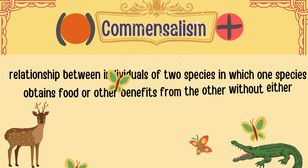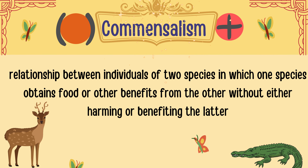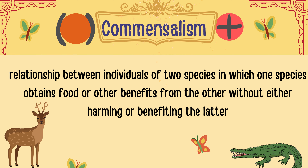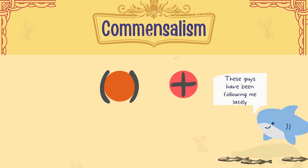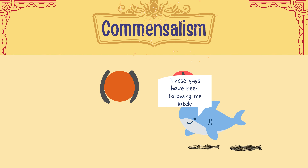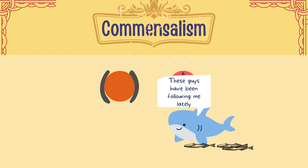After that, commensalism. Commensalism is a relationship between individuals of two species in which one species obtains food or other benefits from the other without either harming or benefiting the latter. Basically, it's a plus and nothing symbol. An example of commensalism is the shark and remora fish. The remora fish follows the shark in order to get waste food from the shark, while the shark gains nothing from this interaction.